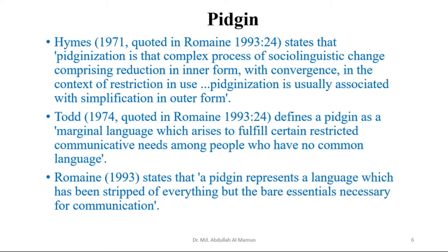Todd, quoted in Romaine, defines a Pidgin as a marginal language — not a standard language, not a central language, a peripheral language — which arises to fulfill certain restricted communicative needs among people who have no common language. Romaine states that a Pidgin represents a language which has been stripped of everything but the bare essentials necessary for communication. Pidginization has only important forms or aspects of a language, stripped of anything additional which is not important for communication.